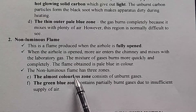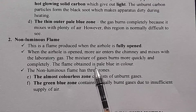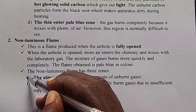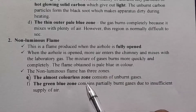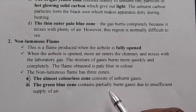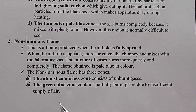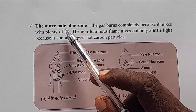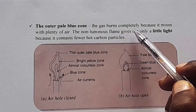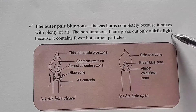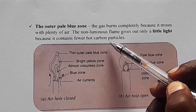The non-luminous flame has three zones. Remember, luminous flame has four zones or four regions. The first zone, A, is called the almost colorless zone, which consists mainly of unburnt gases. Region B is the green-blue zone — it contains partially unburnt gases due to insufficient supply of air. The third part is the outer pale blue zone, where the gas burns completely because it mixes with plenty of air. The non-luminous flame gives out only a little light because it contains few hot carbon particles.